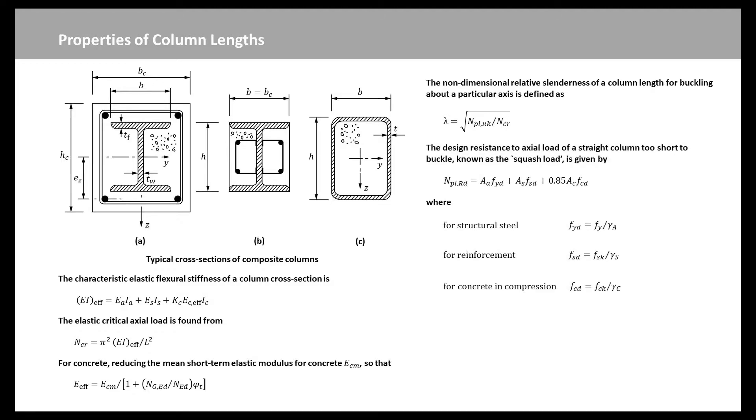The design resistance to axial load of a straight column too short to buckle, known as the squash load, is given by this equation, where the design strength of the materials include structural steel, F1D equal to F1 over gamma A, reinforcement FSD equal to FSK over gamma S, concrete in compression FCD equal to FCK over gamma C, and the gammas are the usual partial factors for ultimate limit states.